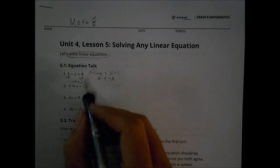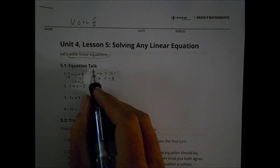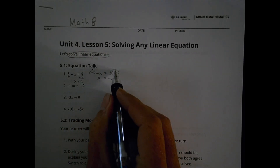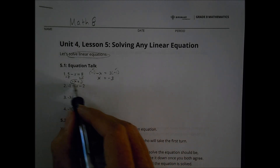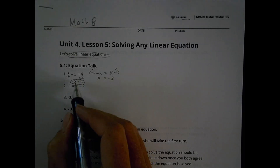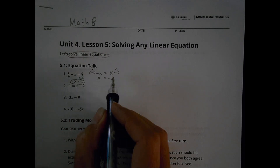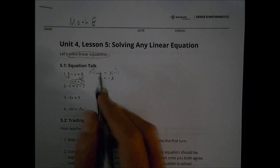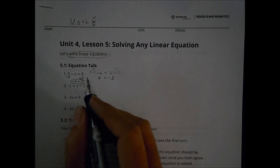This is one of those situations where, if you do it enough times, you know that multiplying both sides by negative 1 changes the signs of everything in the problem. So the negative x becomes a positive x and the positive 3 becomes a negative 3. The more you do that, the more you can do it quickly without having to think about it too much.